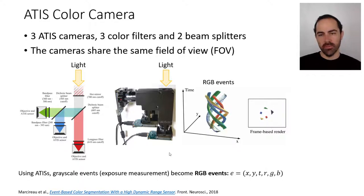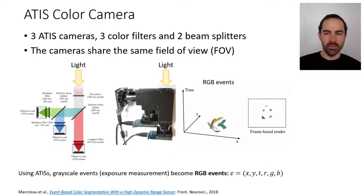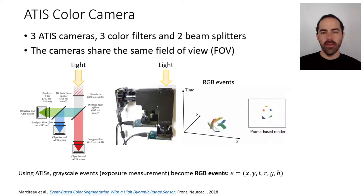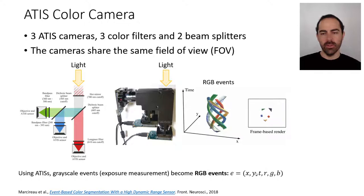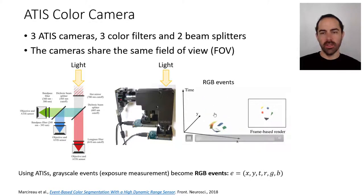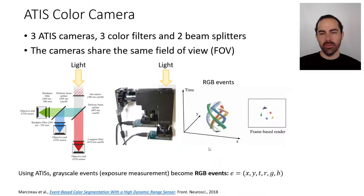What is different about these events compared to the previous ones? The previous sensors produced DVS change detection events. These ATIS events instead have an X, Y, T location where the change of intensity happened, and instead of a polarity they provide three exposure measurements — red, green, and blue absolute intensity. That is why the events here are plotted in color.